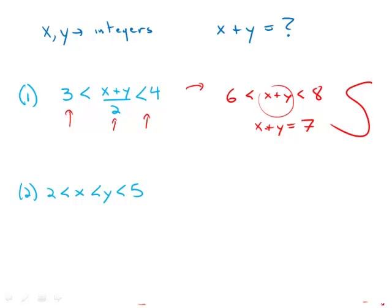Statement number two tells us 2 is less than x is less than y is less than 5. Well, both x and y have to be integers, and there's only two possible integers between 2 and 5. x would have to be 3, y would have to be 4. So here we actually know the values of x and y themselves. So we can add them. x plus y would have to be 7.